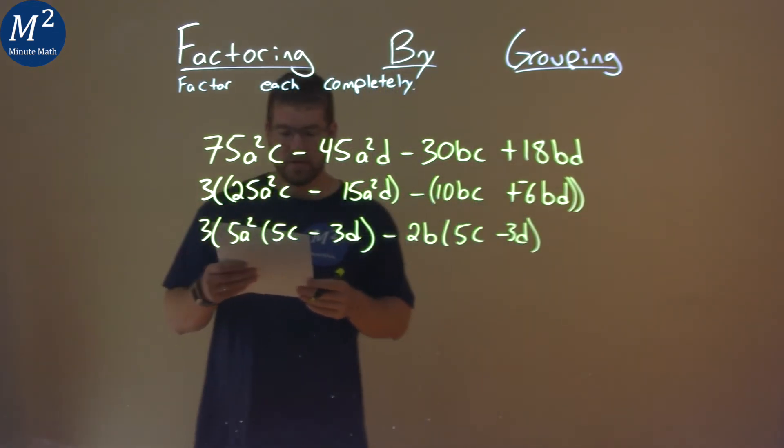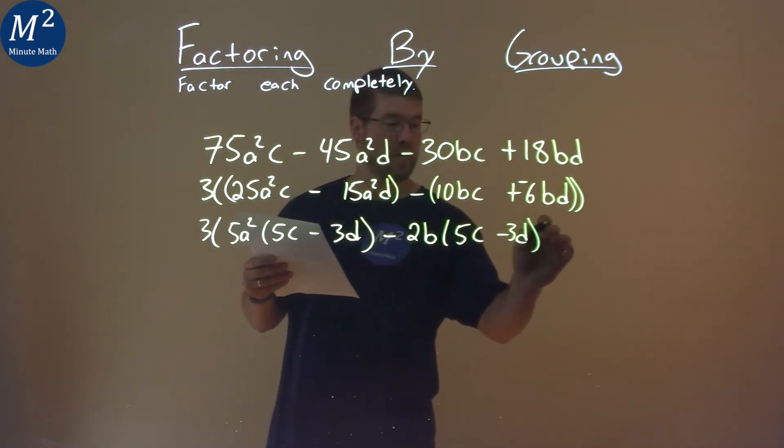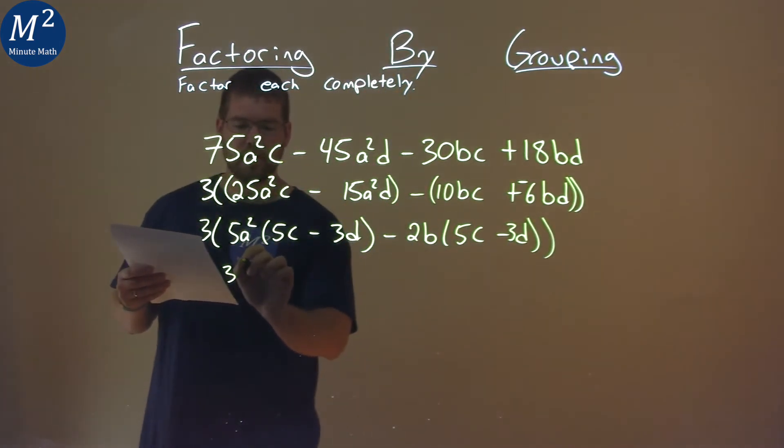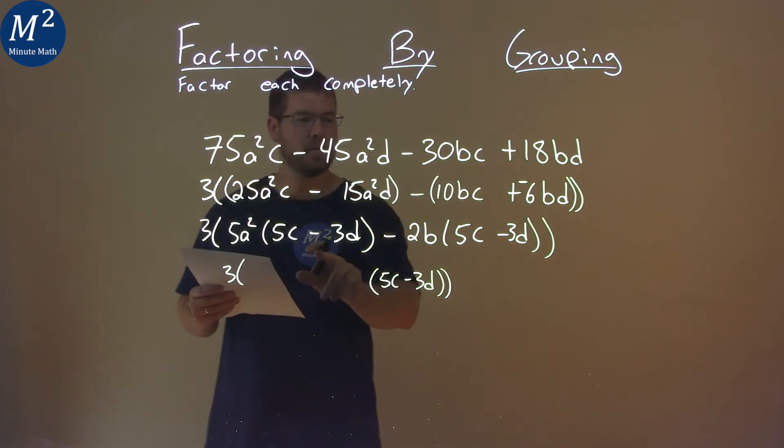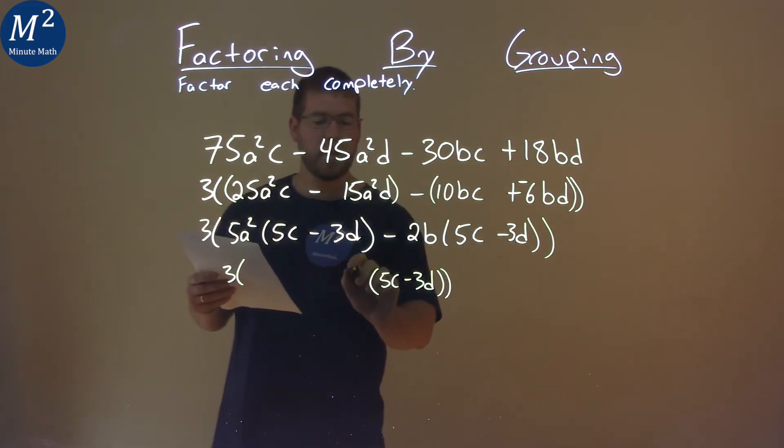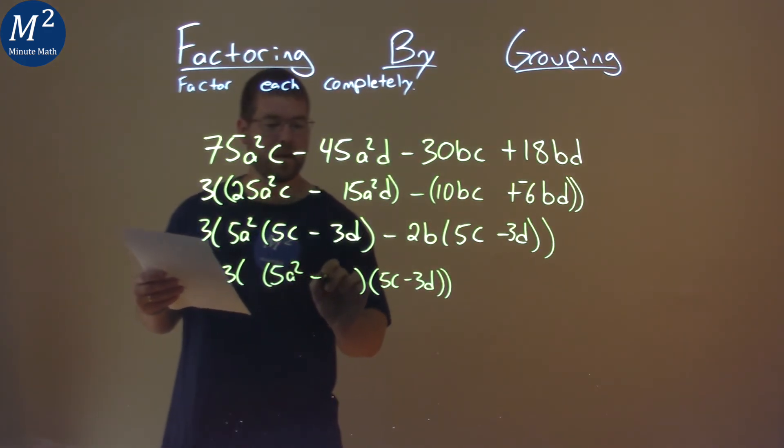Now 5c - 3d is repeated. You can see that. Don't forget the other big parenthesis. I'm going to pull out the 5c - 3d here. And what I'm left with is 5a² - 2b.